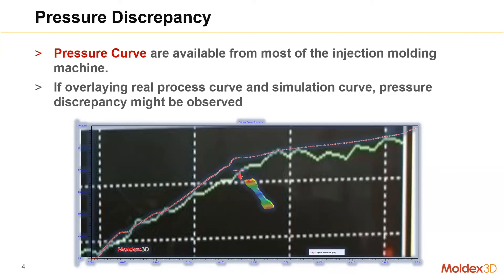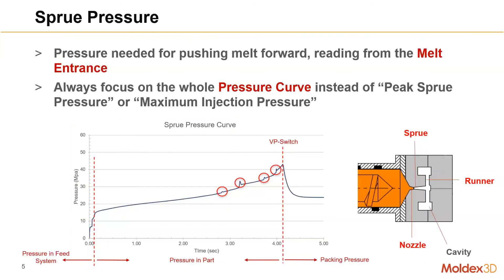In this case we can see that the tendency and slope seem similar between the simulation and reality. For the pressure curve, we usually look at the sprue pressure. Sprue pressure means the pressure value read around the sprue by the sensor.